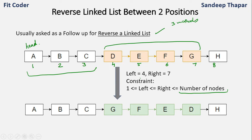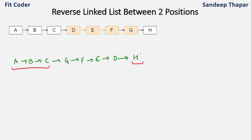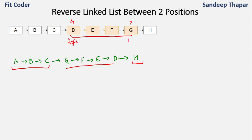Now let's see how we can solve this. A, B, C remains as-is, H remains as-is, and we already know how to reverse a linked list. So we reverse the middle portion to G, F, E, D. The main challenge is how we link the first part before the left position and the end part after the right position — that is, connecting ABC with the reversed part and the reversed part with H.